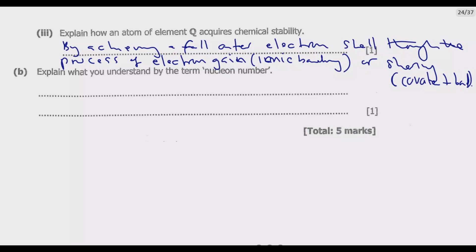Part B: Explain what you understand by the term nucleon number. The term nucleon number is also known as the mass number, which refers to the total number of protons and neutrons in an atomic nucleus.